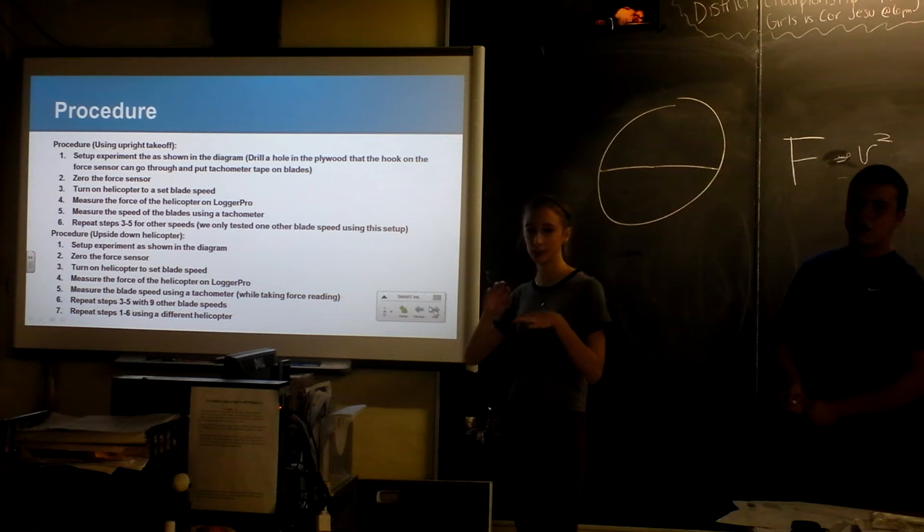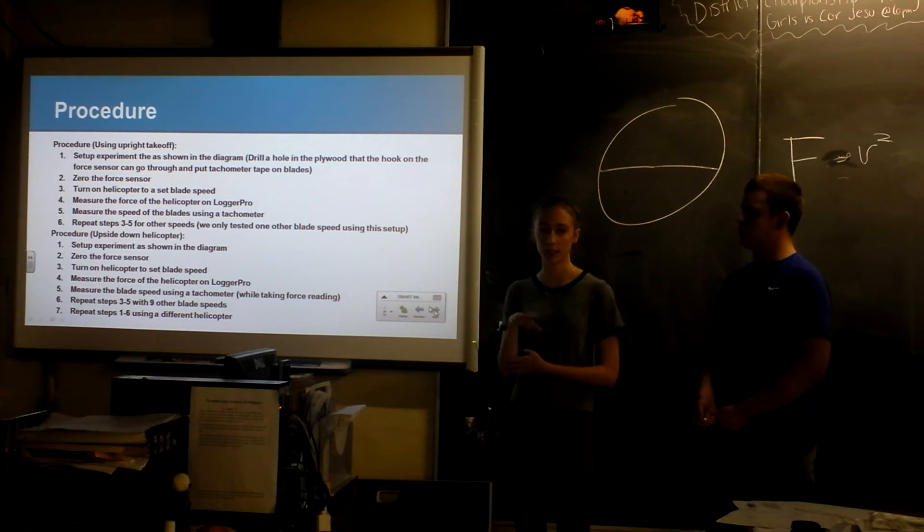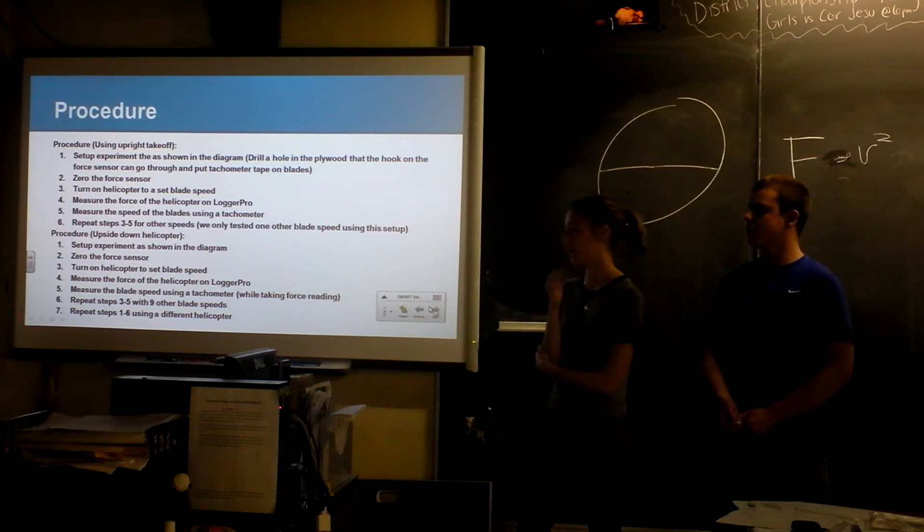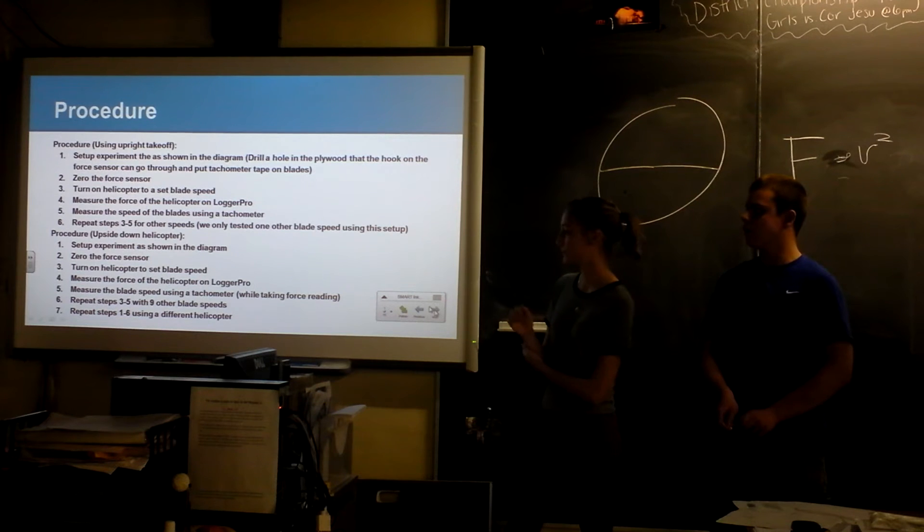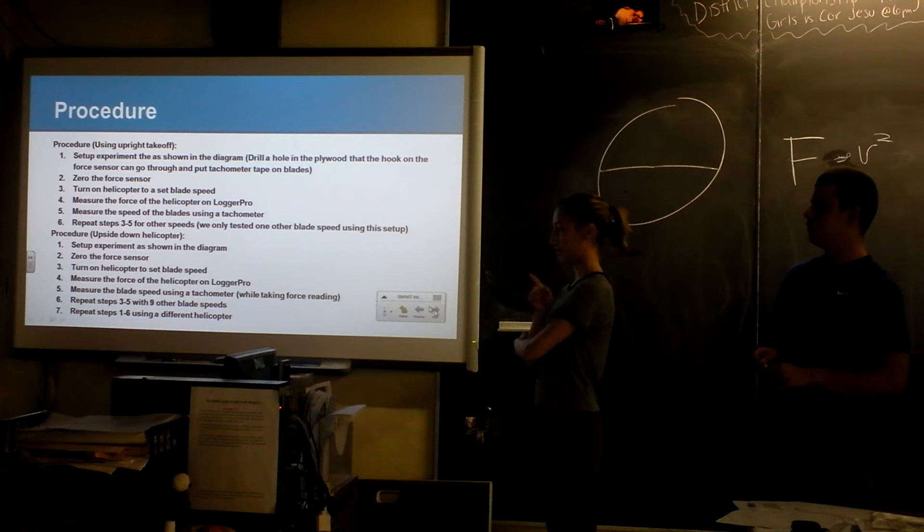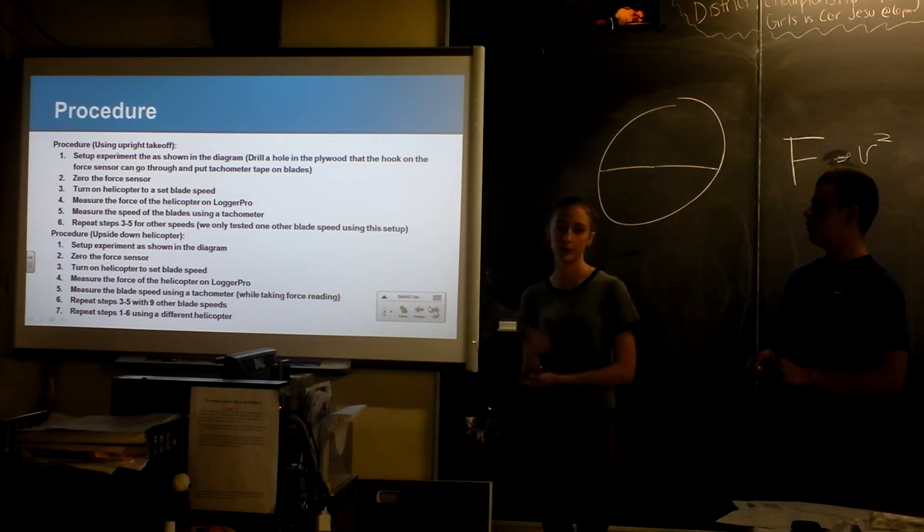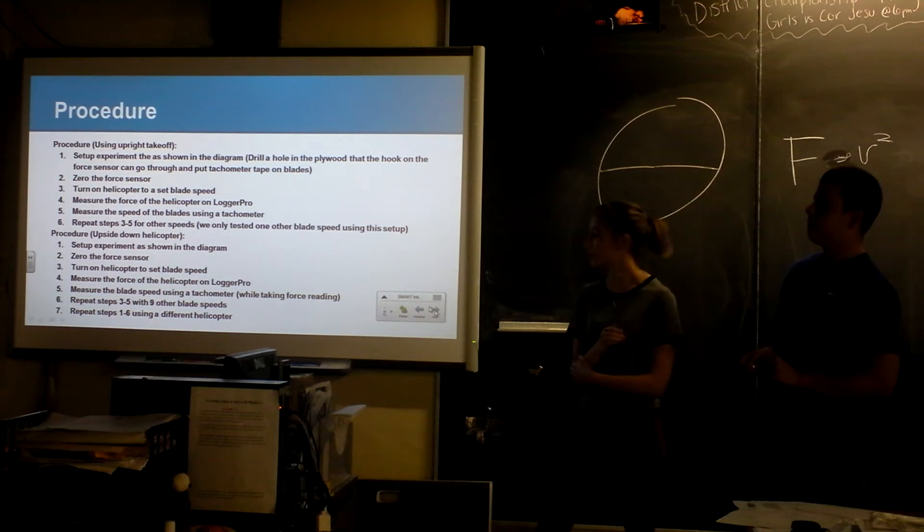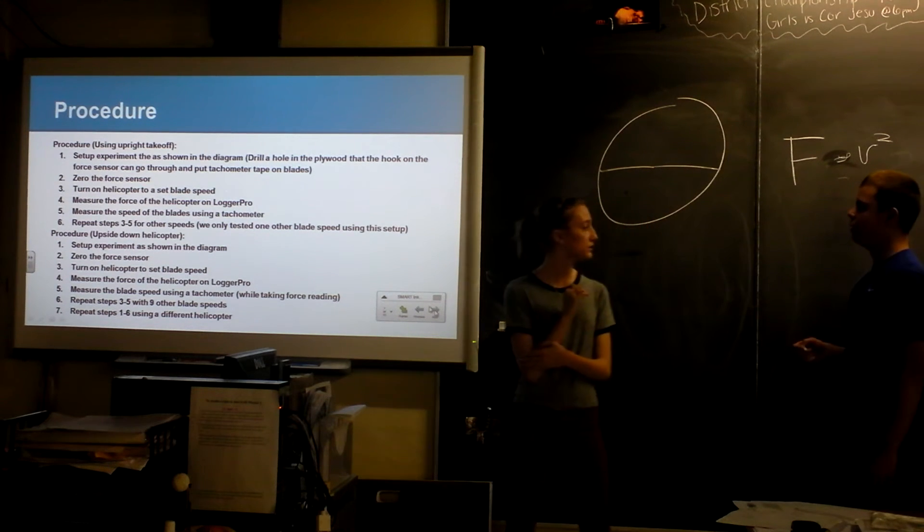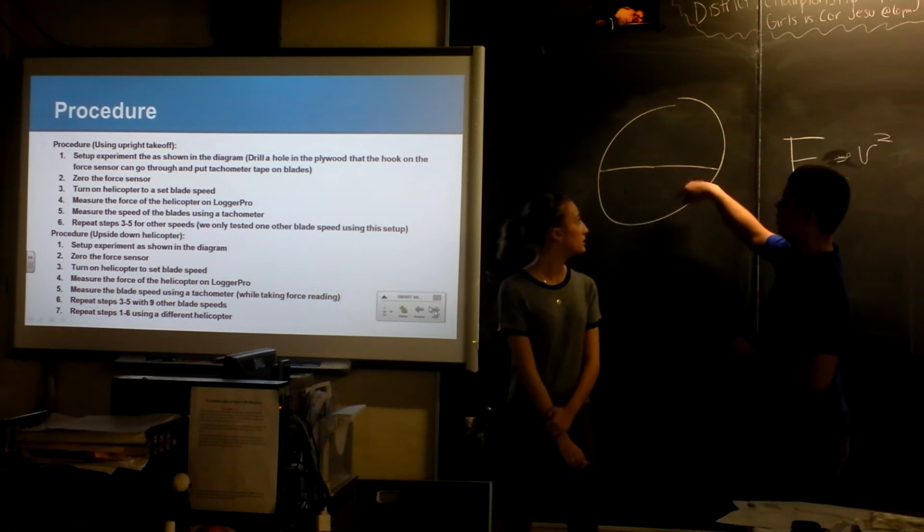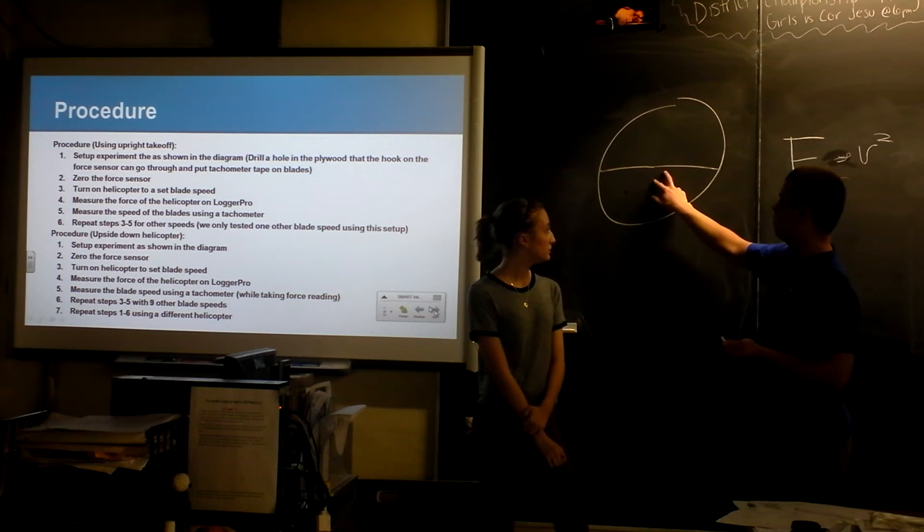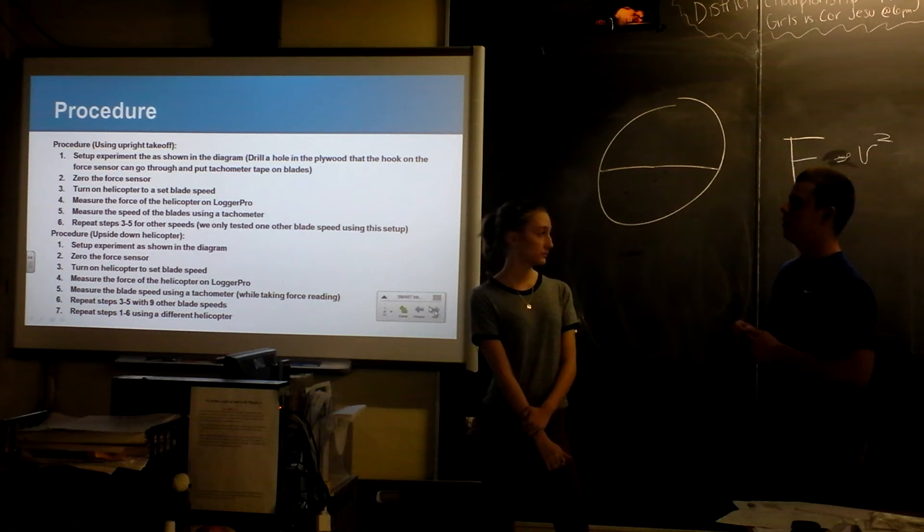So for the procedure, they're basically the same. We zeroed the force sensor, and then we turned on the helicopters to a set speed, and we measured the force with Logger Pro, and then we pointed the tachometer at the blades and measured the revolution, and then we repeated with different blade speeds. So when you measure the blade speeds, you're actually getting double the RPM that you want because you got two blades, so you're reading half as quick as you would as if one blade went around, which is the actual speed that both blades are moving at. So any RPM reading we got, we have to divide by two.